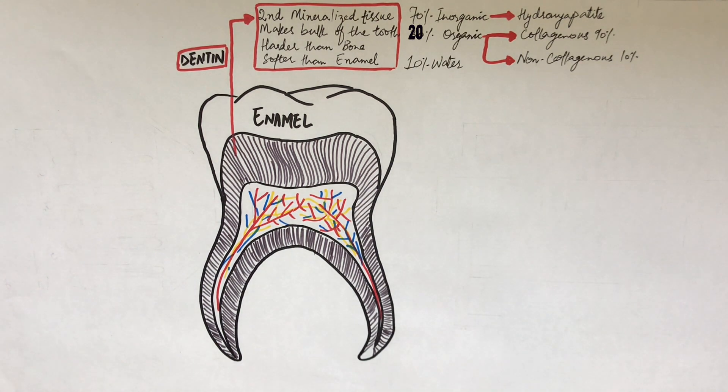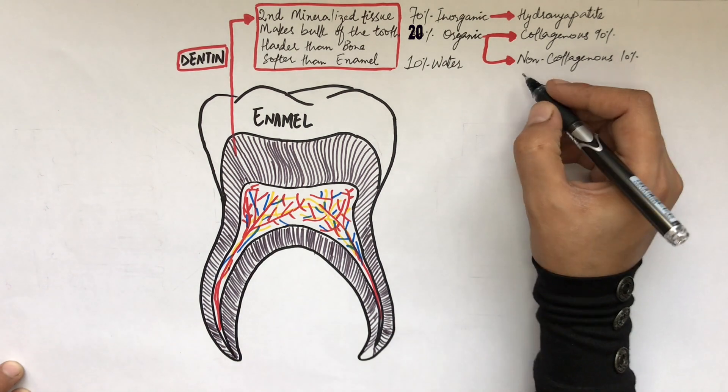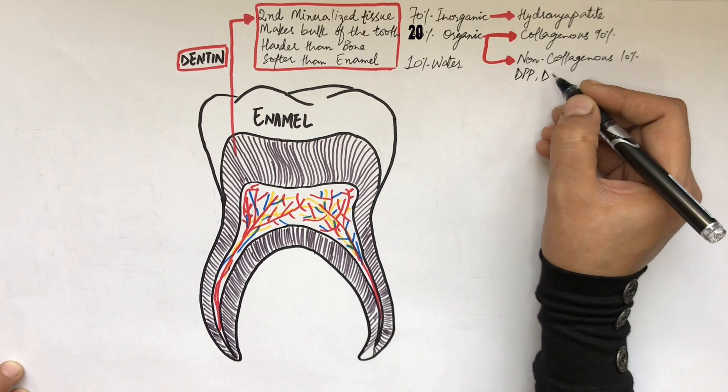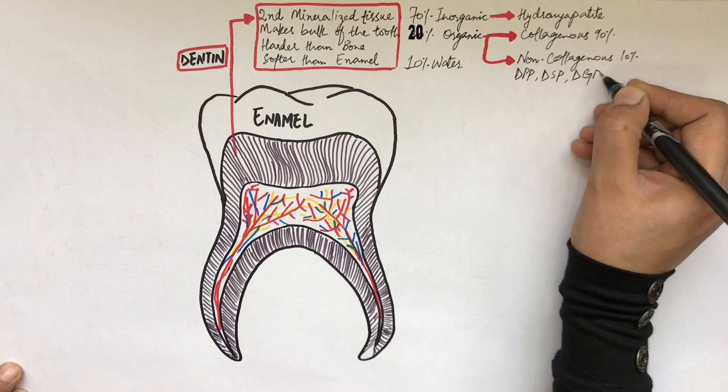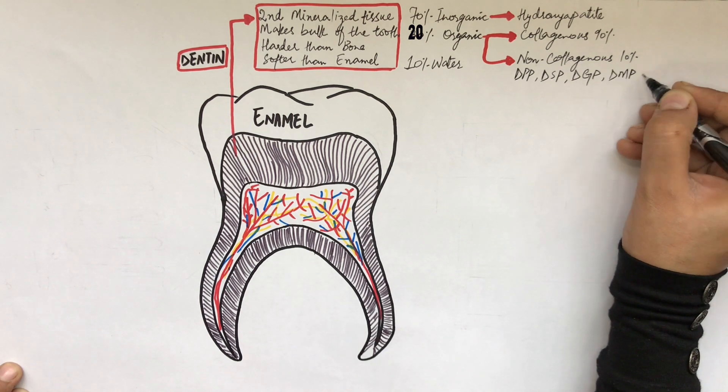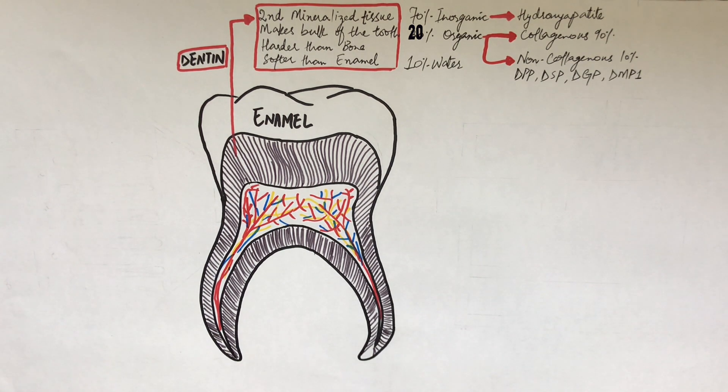The collagenous proteins are mainly type 1 collagen with small amounts of type 3 and type 5 collagen. The non-collagenous proteins include dentine phosphoproteins, dentine cyanoproteins, dentine glycoproteins, dentine matrix protein 1, and other types of proteins. These non-collagenous proteins fill up the space in between the collagenous proteins.